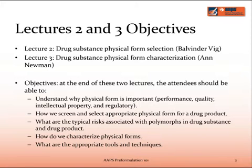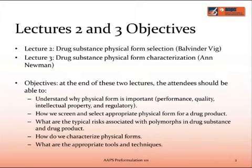In this lecture, I will cover drug substance physical form selection. In the third lecture, Ann Newman will be covering drug substance physical form characterization. The objectives at the end of these two lectures are that you should be able to understand why physical form is important from performance, quality, intellectual property, and regulatory point of view. How we screen and select appropriate physical form for a drug product. What are the typical risks associated with polymorphs in drug substance and drug product? How do we characterize physical forms, and what are the appropriate tools and techniques to do so?